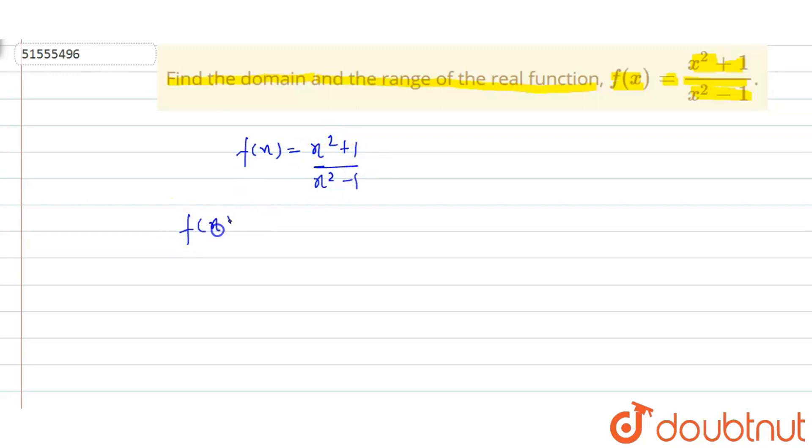I can see that f is well defined for all x such that x square minus 1 cannot be equal to 0. If my denominator is equal to 0, then the function is undefined. So, x square minus 1 cannot equal 0, and x cannot be equal to minus 1 and plus 1.